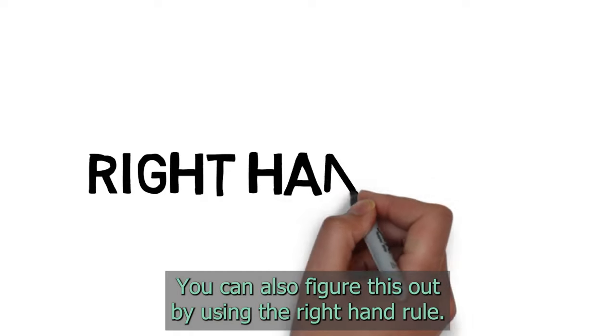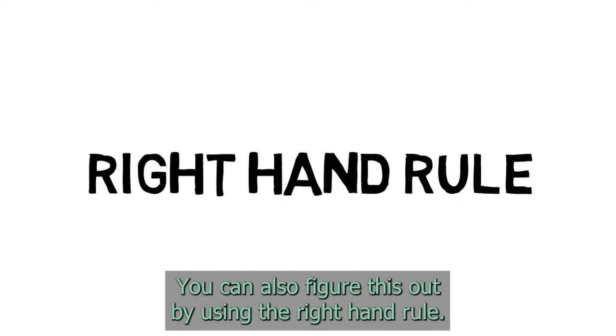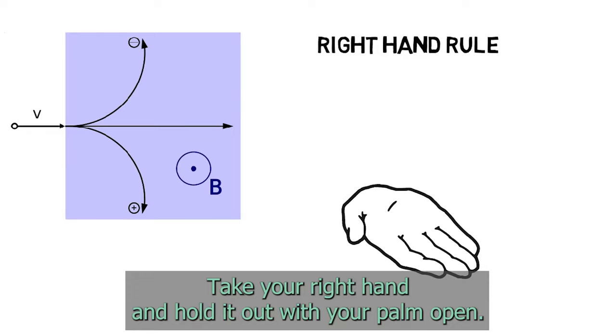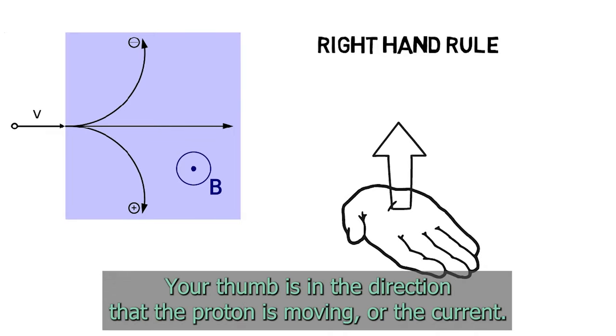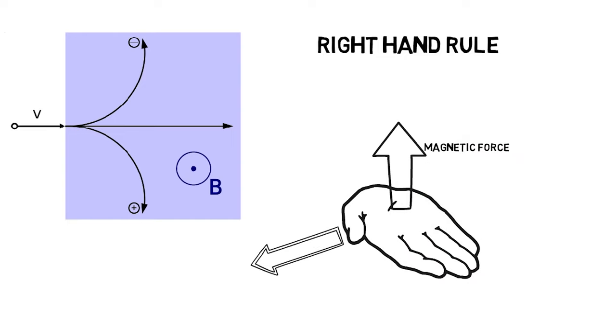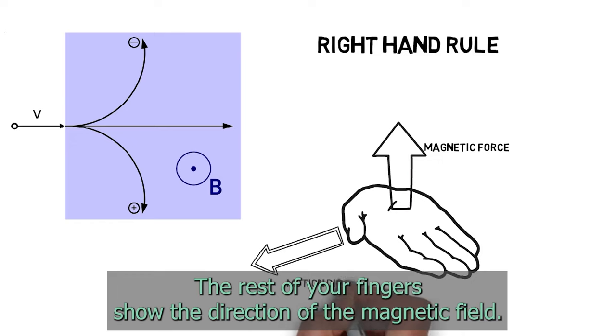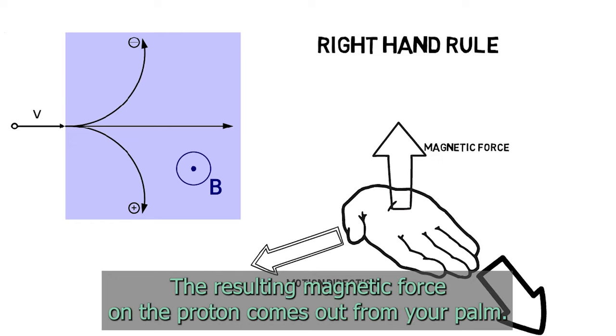You can also figure this out by using the right hand rule. Take your right hand and hold it out with your palm open. Your thumb is in the direction that the proton is moving, or the current. The rest of your fingers show the direction of the magnetic field. The resulting magnetic force on the proton comes out from your palm.